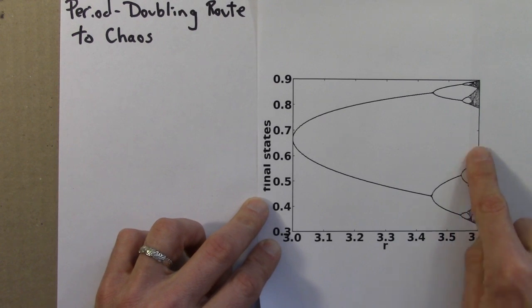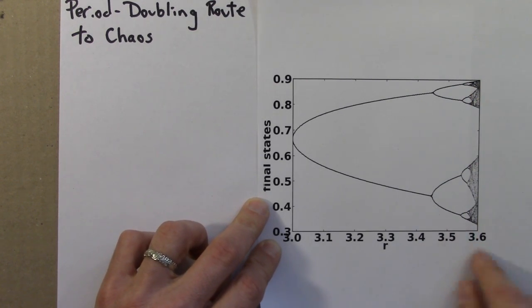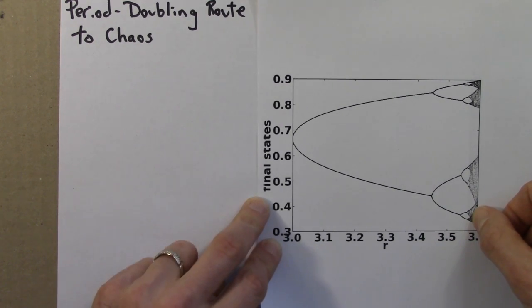And by the time we're over here, in these dark regions, the function is chaotic and it has sensitive dependence on initial conditions. So if one looked for the butterfly effect over here, one would see that at 3.59 or whatever that is, there is indeed chaos, aperiodicity, and the butterfly effect.